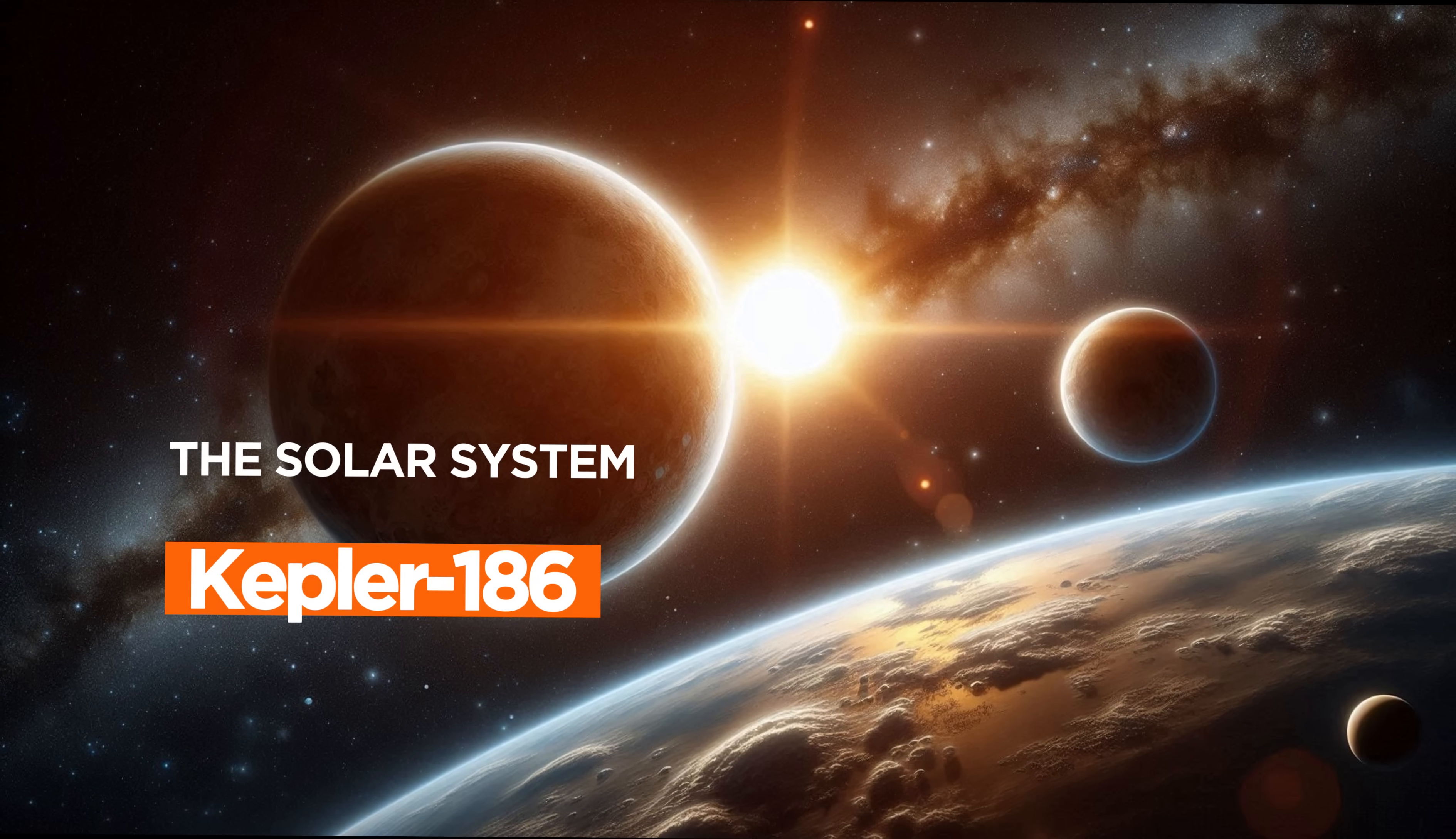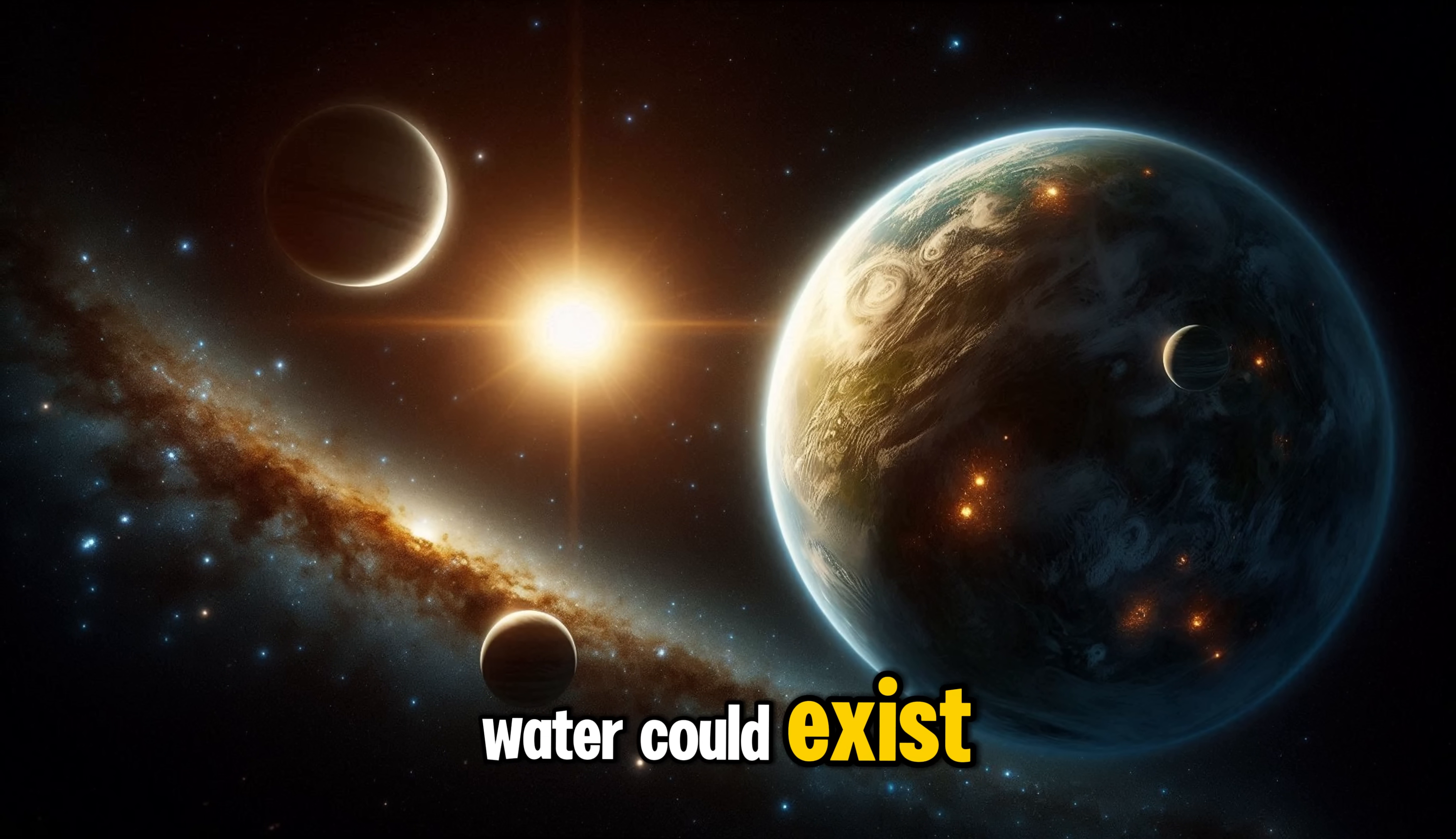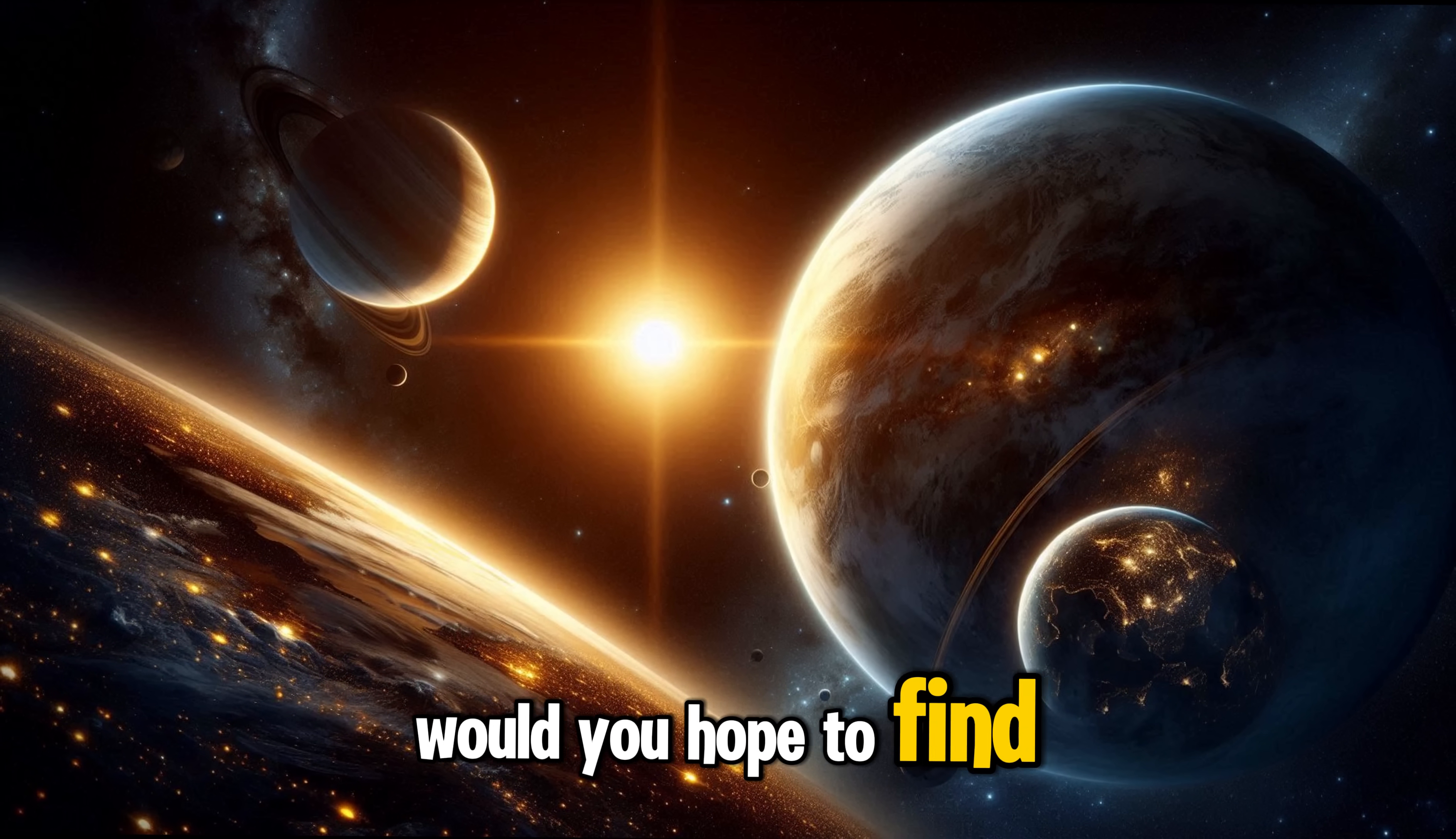The Kepler-186 solar system. Kepler-186 is famous for having an Earth-like planet called Kepler-186f. It's in the habitable zone where liquid water could exist. Kepler-186f could potentially be a home to alien life. Imagine what kinds of creatures might live there. If you could visit an Earth-like planet, what kind of alien life would you hope to find?